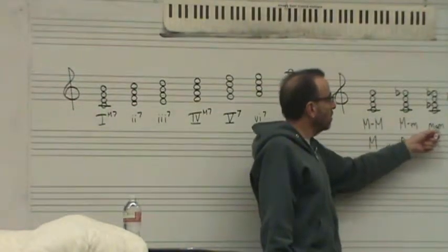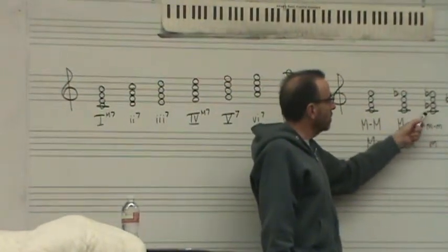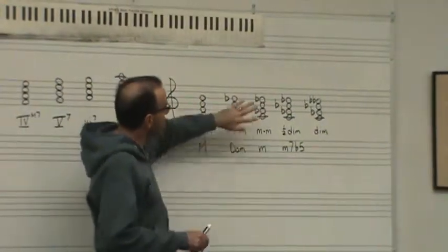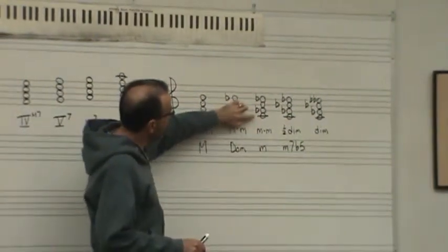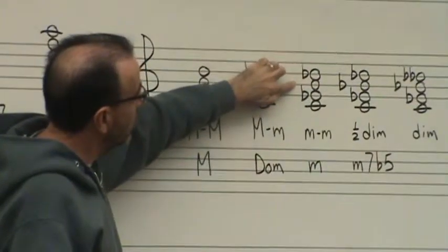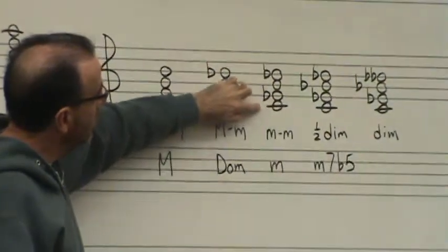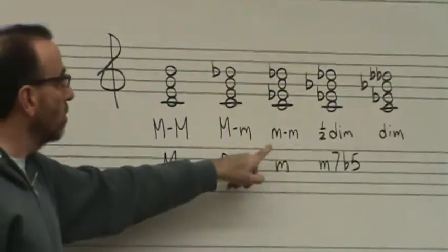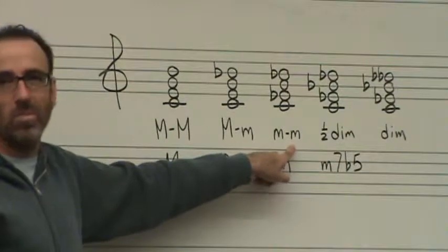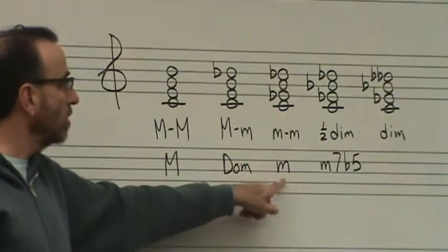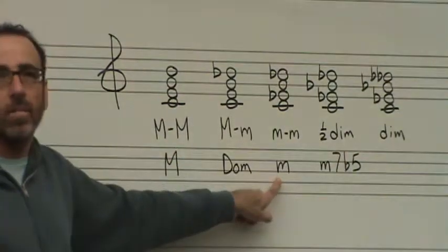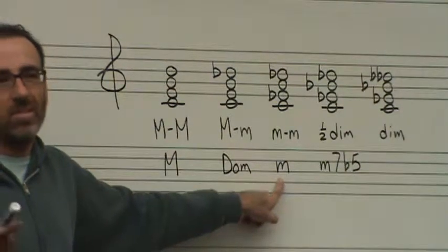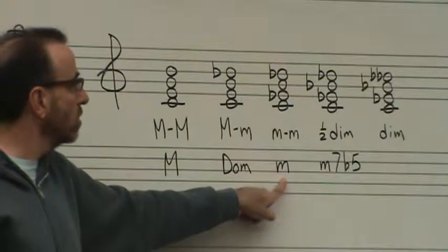Then there's the minor-minor seventh chord, which is a minor triad and a minor seventh. So the bottom triad, C, E flat, G, is a minor triad, and C to D flat is a minor seventh. So minor-minor seventh, or more commonly, just call it a minor seventh chord, and that's true in both commercial and traditional harmony.